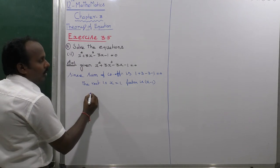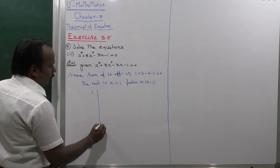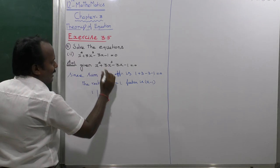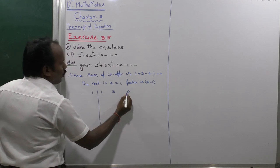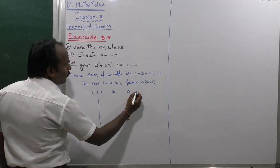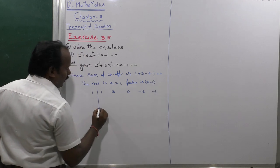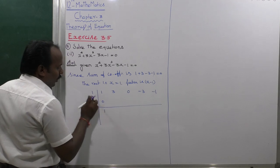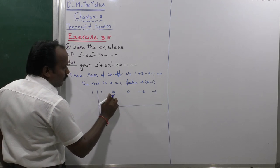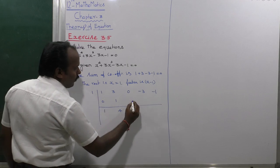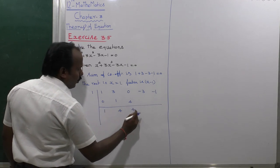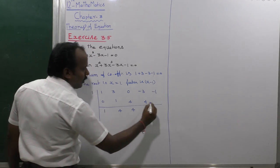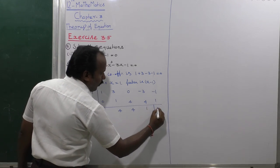We follow the method of synthetic division. Using divisor 1: the coefficients are 1 (x⁴), 3 (x³), 0 (x²), -3 (x), -1 (constant). Performing the division: 1 into 1 is 1, giving 4; 4 into 1 is 4; 1 + 1 = 0. The remainder is 0.